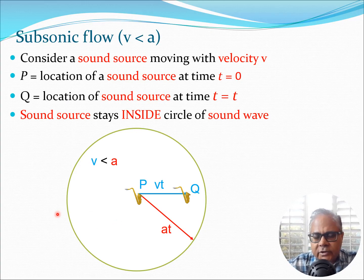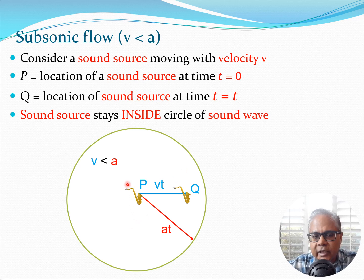So let us first start with subsonic flow. Subsonic flow, as you recall, is when the velocity v is less than the speed of sound a. To look at this concept pictorially, consider a sound source moving with velocity v. Here I have put this trumpet as a sound source, and this is moving with velocity v. So after time t this is going to end up at point Q, and this blue line tells you how much this particular sound source has moved. So this distance PQ is the amount the sound source has moved from time t equals 0 to time t equals t.